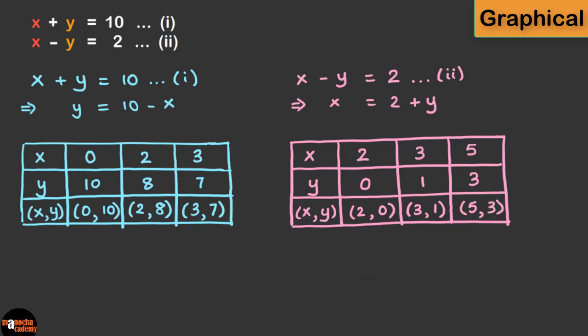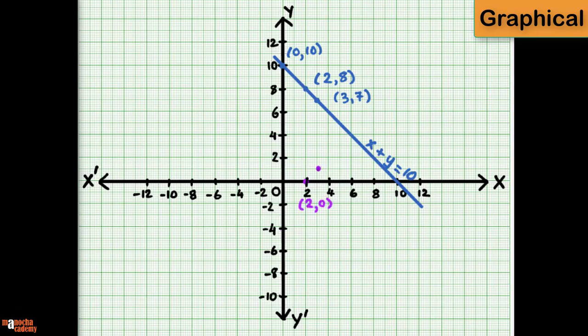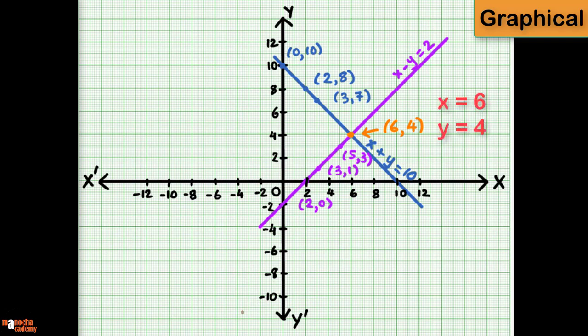Now let's plot these 3 points on the same graph. Once again, we'll join the points and extend them both ways. So we get the graph of the equation x minus y equal to 2, which is the straight line here. Now mark the point of intersection of the two lines. And here it is 6, 4. So the solution is x equal to 6 and y equal to 4.